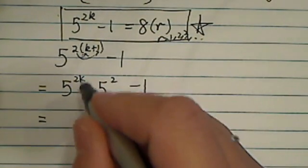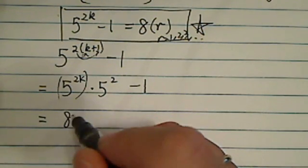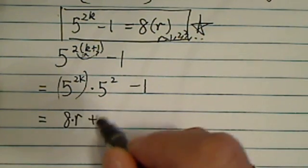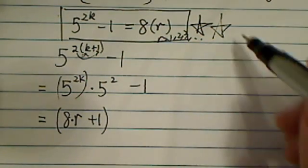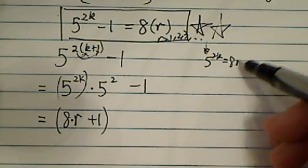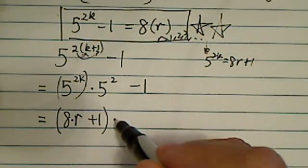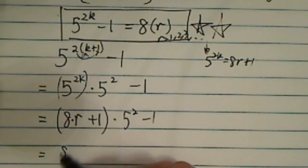And then 5 to the 2k, I'm going to actually make this one into 8 times r plus 1, because from this starting part, I resolved for 5 to the 2k. That's equal to 8r plus 1, times 5 squared minus 1. And then from here, it's pretty easy.